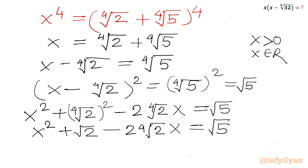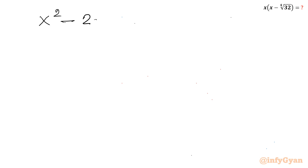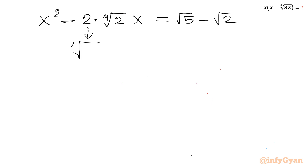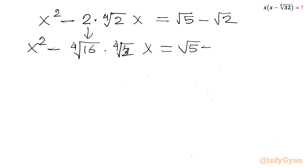So we can write: x² − 2·⁴√2·x = √5 − √2. Now the 2 we can write as ⁴√16, so: x² − ⁴√16·⁴√2·x = √5 − √2, which gives x² − ⁴√32·x = √5 − √2.